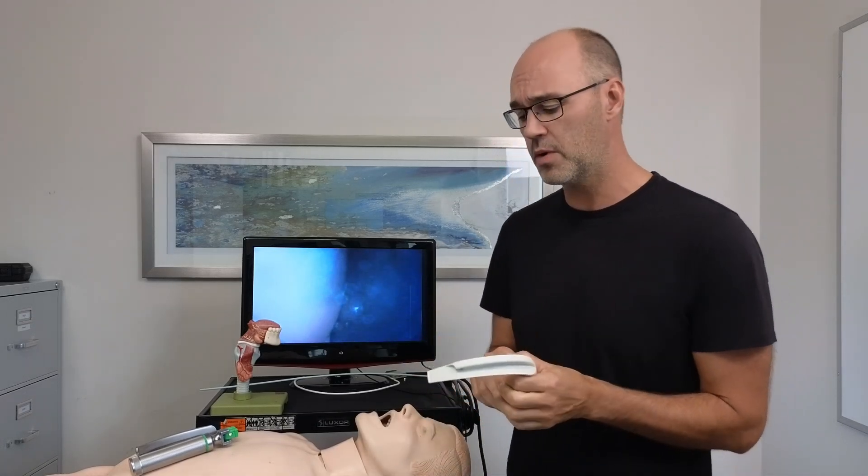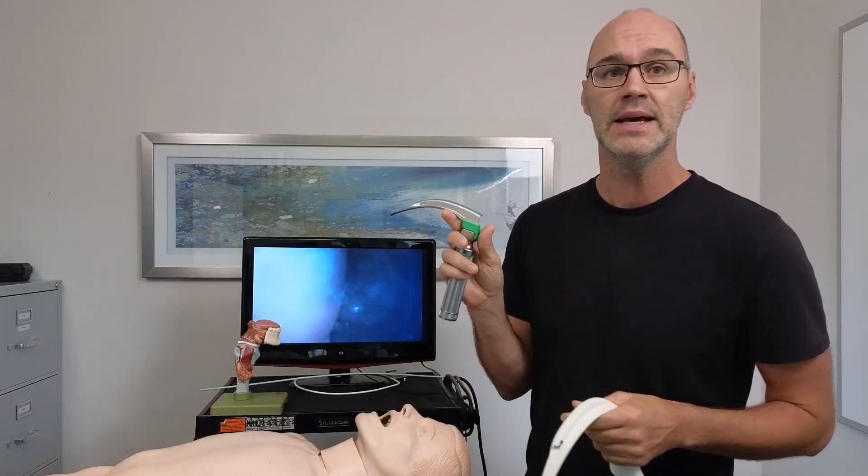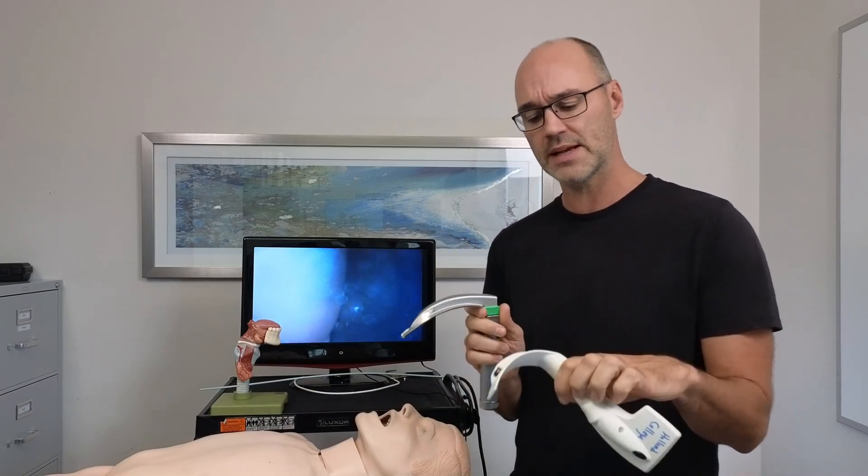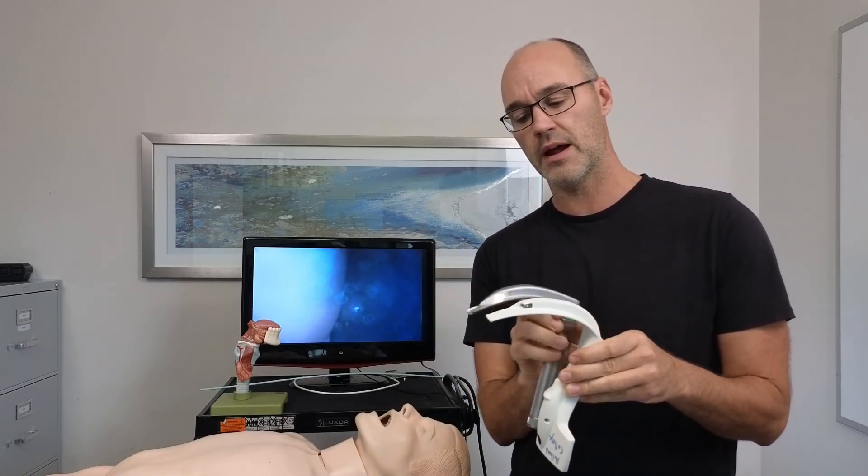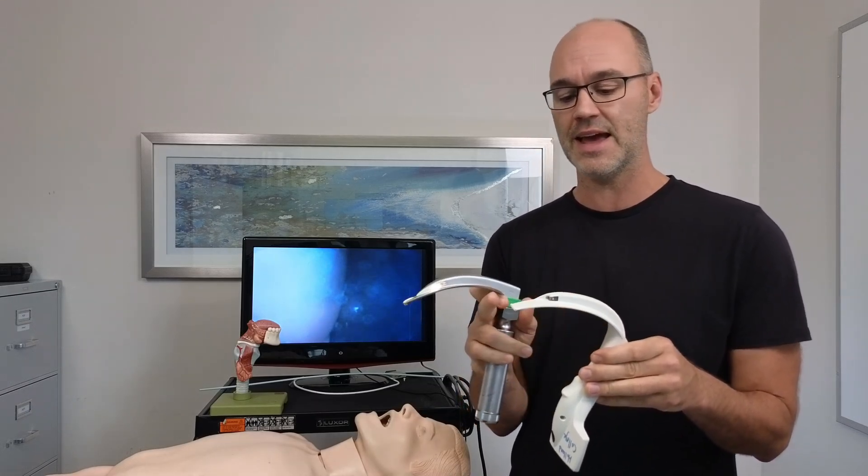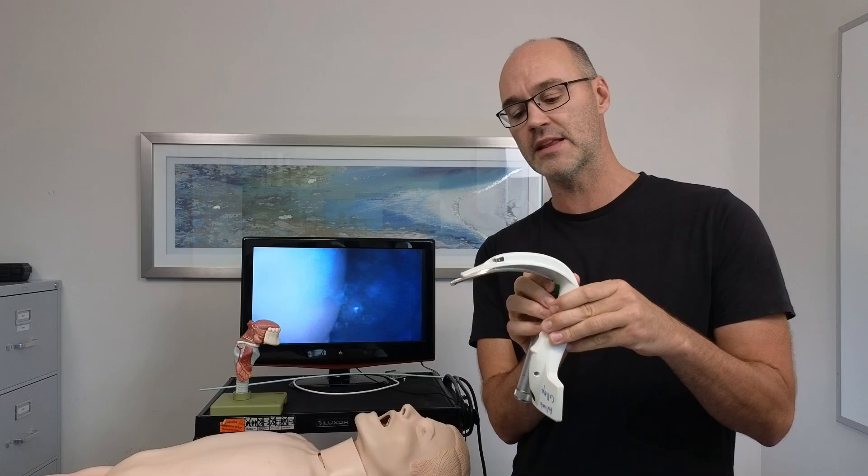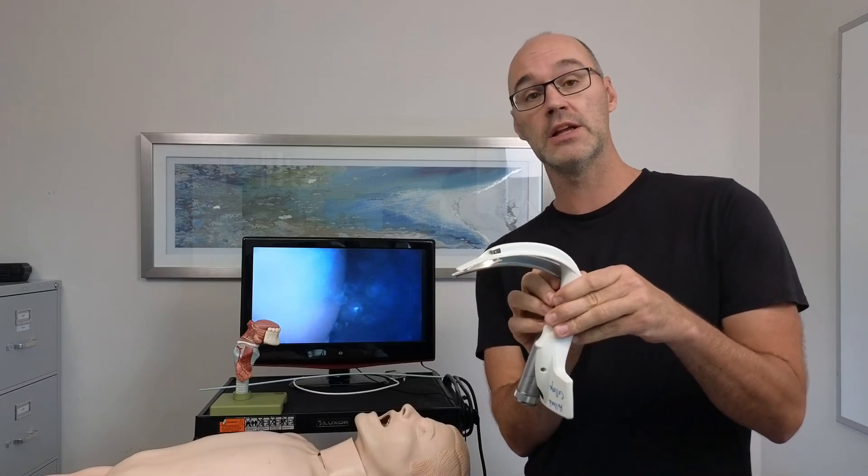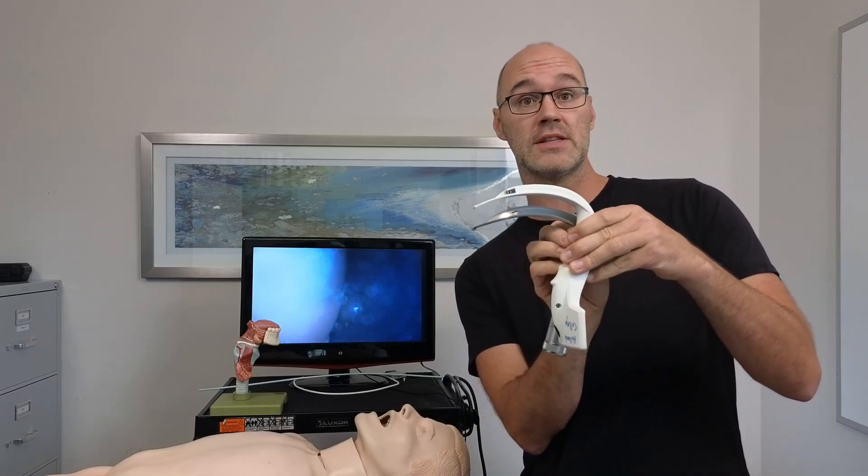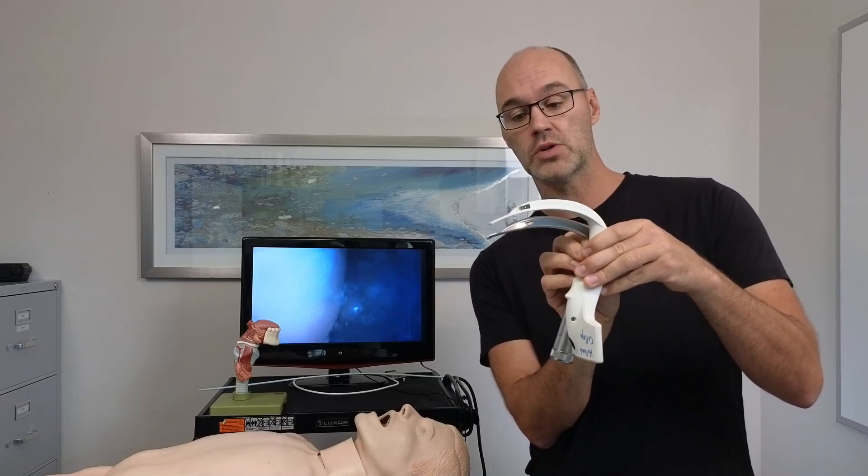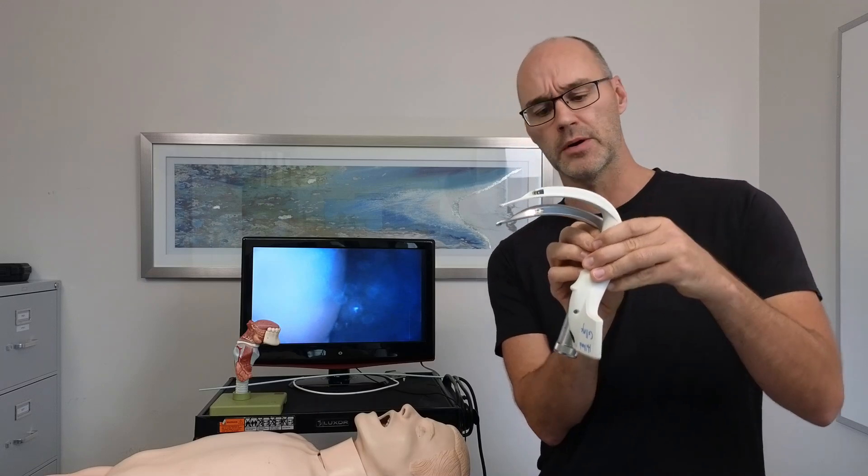When we think of video laryngoscope, we want to think of the difference probably starting off the differences from direct. Indirect with a Macintosh blade. This iView, as we hold it up, and I will be speaking of the business end, the end that goes into the patient's mouth is what we're concerned about. You can see that these are virtually the same angle as far as the ends, where the curve and the approach that that blade will be making is very similar.